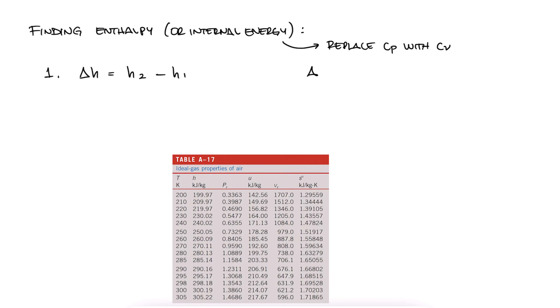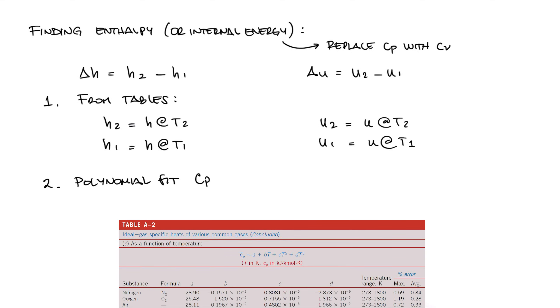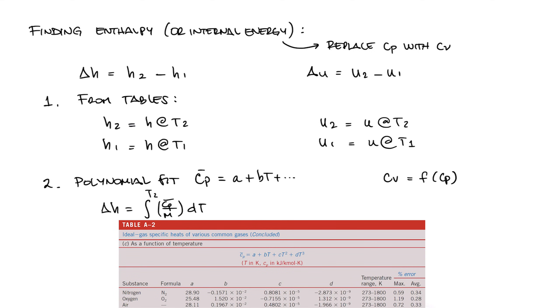find the table that has the enthalpy changes from a random reference temperature to find the enthalpy change as the difference between enthalpies. Two, find the polynomial coefficients and carry out the integral.